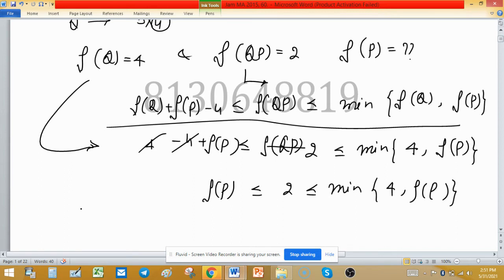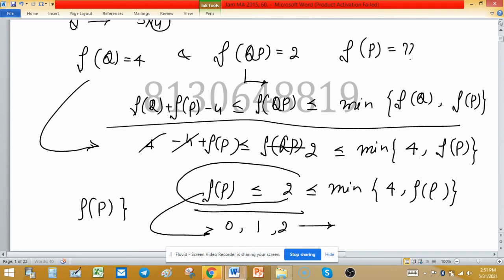So what will be the rank of P? We know that rank of P is always less than or equal to 2, so 0, 1, and 2. These are the only three possibilities coming from this point.